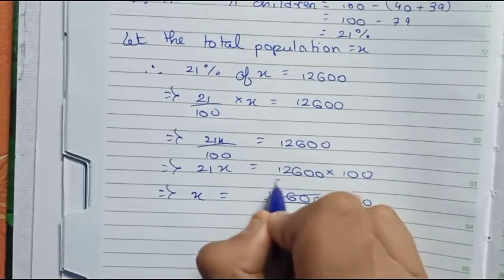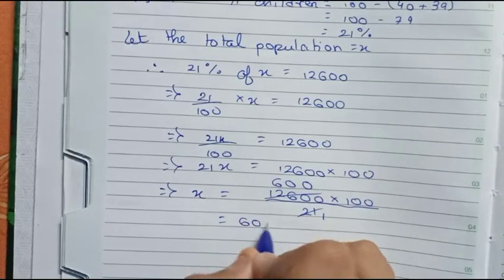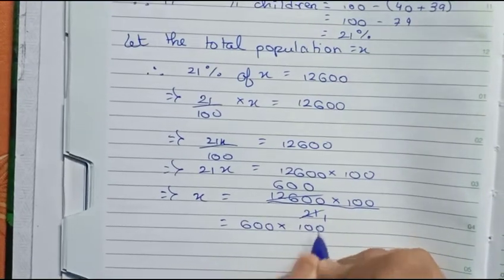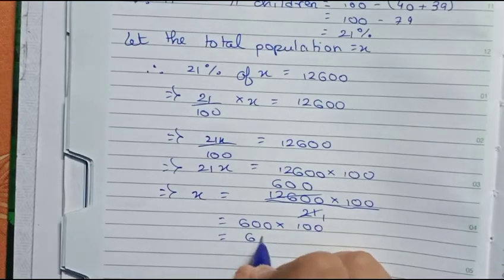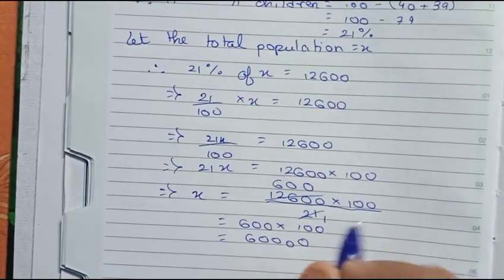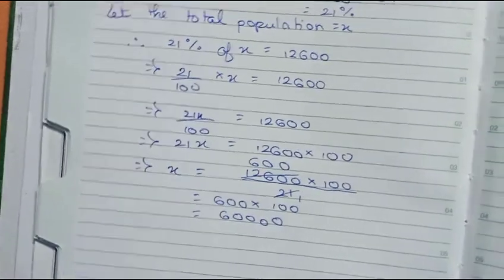It becomes 600 into 100, which is 60,000. So this is the total population. So now I have to find the number of men.